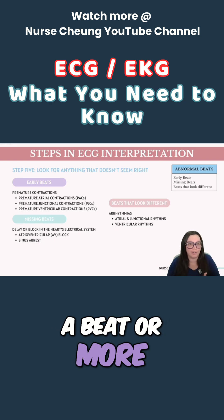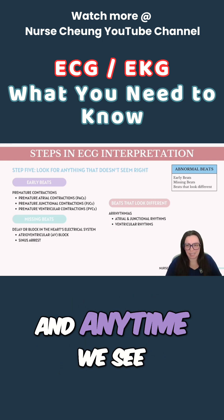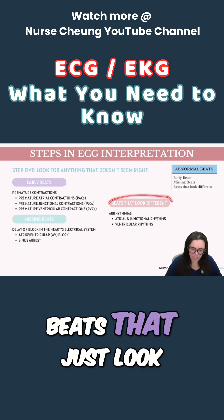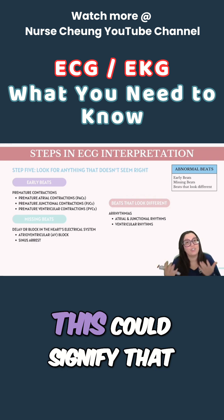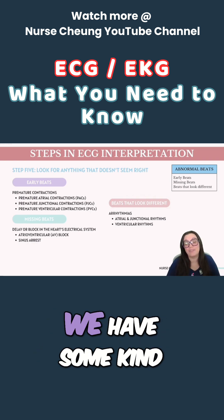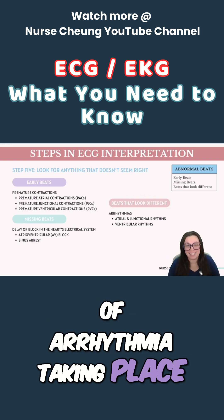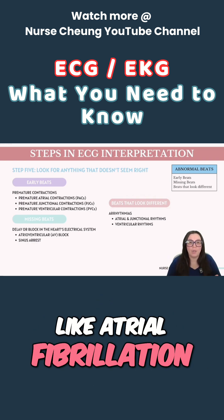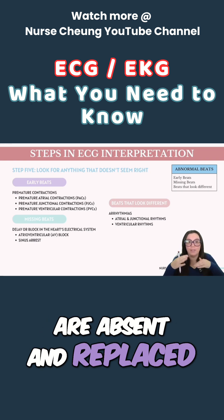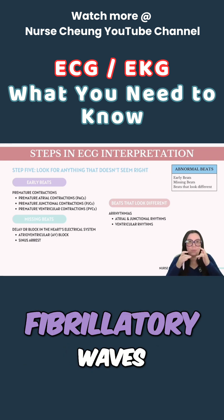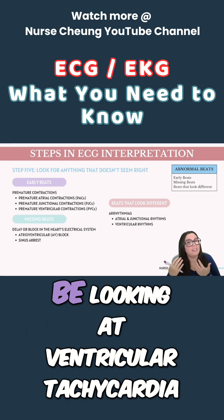Anytime we see beats that just look a little bit different from the rest, this could signify that we have some kind of arrhythmia taking place, like atrial fibrillation, where the P waves are absent and replaced by these fibrillatory waves.